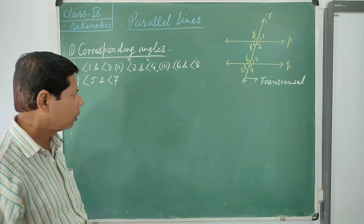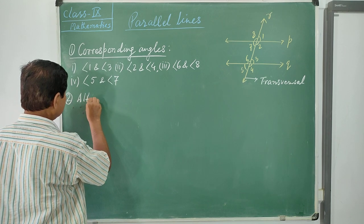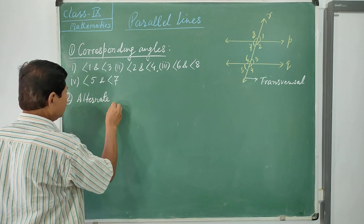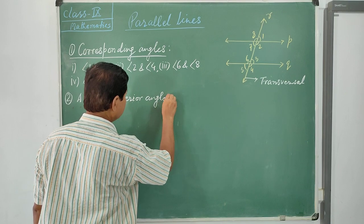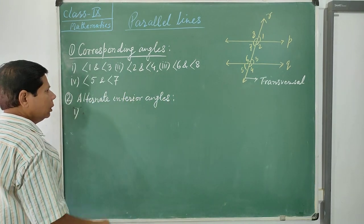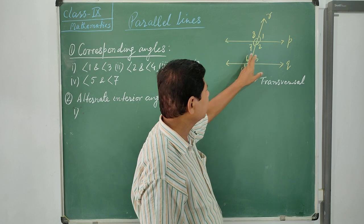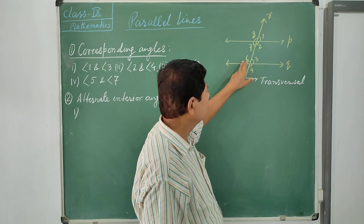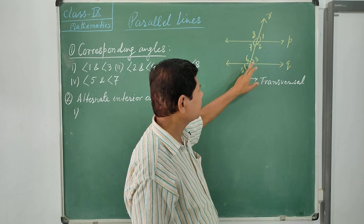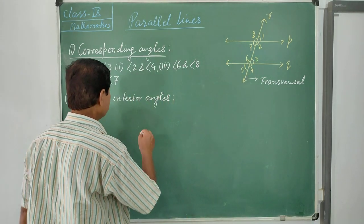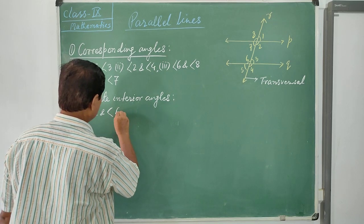Second, alternate interior angles. These are angles on two sides of the transversal that form inside the two parallel lines. Angle 2 and angle 6 are the first pair of alternate interior angles; they are both obtuse and lie inside the two lines. Angle 3 and angle 7 form the second pair.